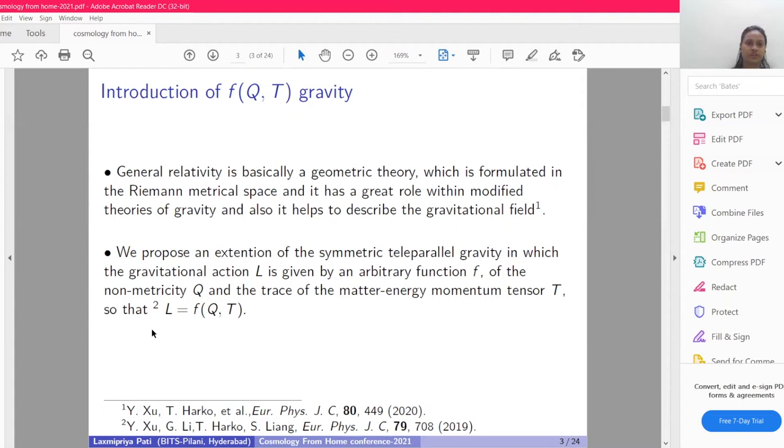First I will explain the introduction of f(Q,T) gravity. As we know, general relativity can be explained in two ways: teleparallel representation or curvature representation. In teleparallel representation, the torsion term is non-zero. In curvature representation, the curvature term is non-zero, but the torsion and non-metricity term are zero. General relativity is a symmetric theory formulated in Riemannian metrical space and it has a great role within modified theories of gravity.